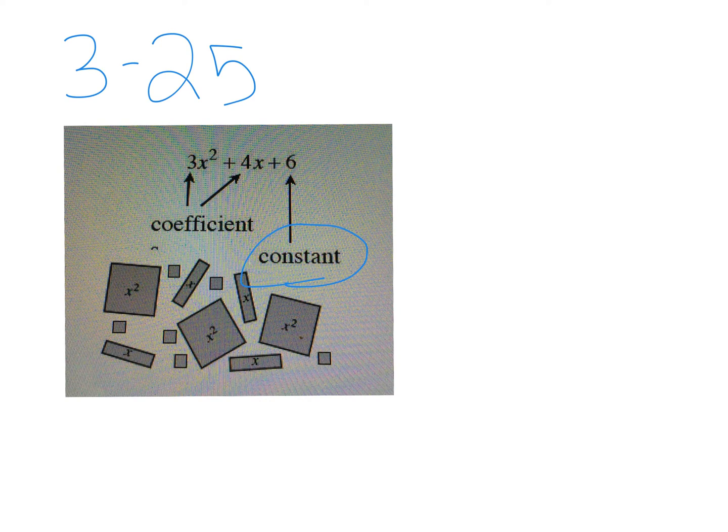The second vocab term here is the word coefficient, and the word coefficient goes along with the number that is in front of the variable. The coefficient tells us that there are three of the x squared terms - there are three x squared tiles, one two three - and that would also tell me that there are four of the x tiles, one two three four.